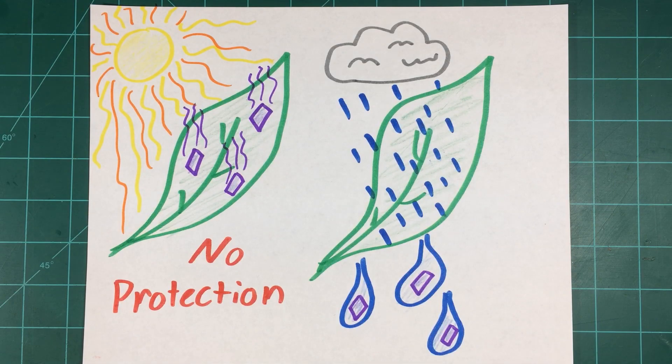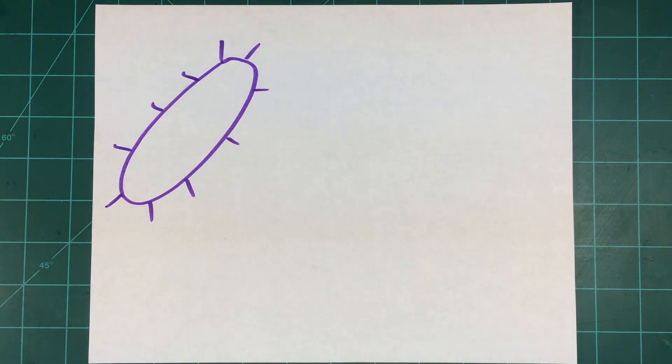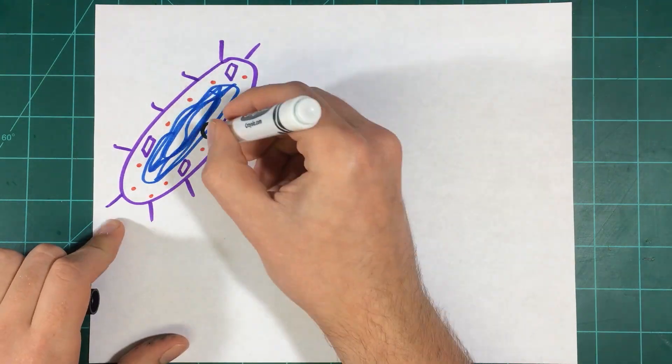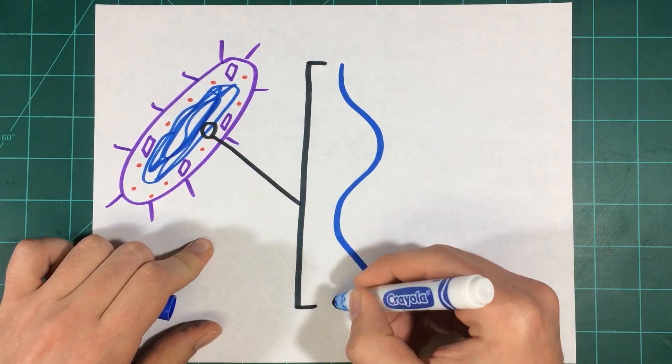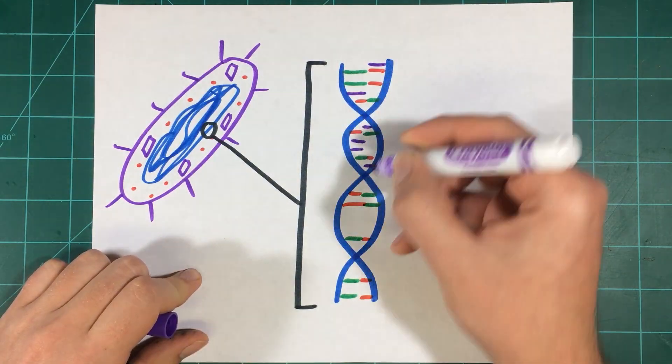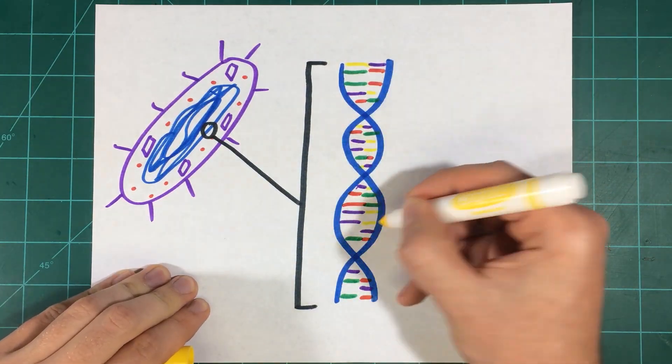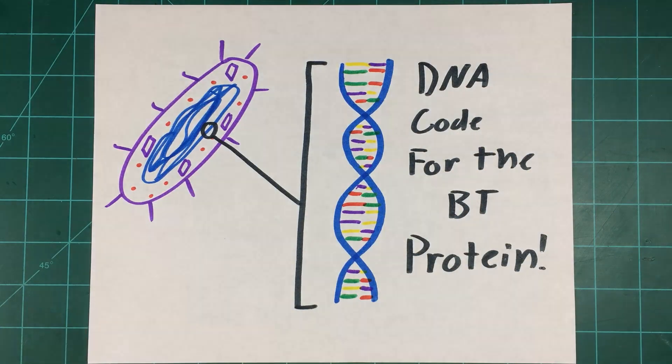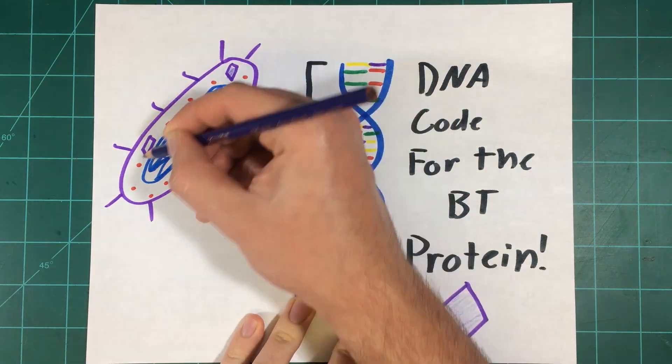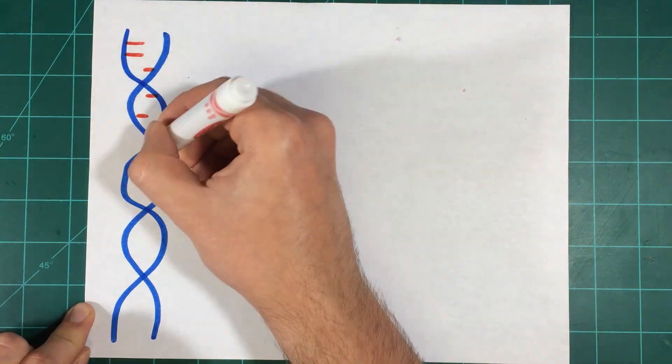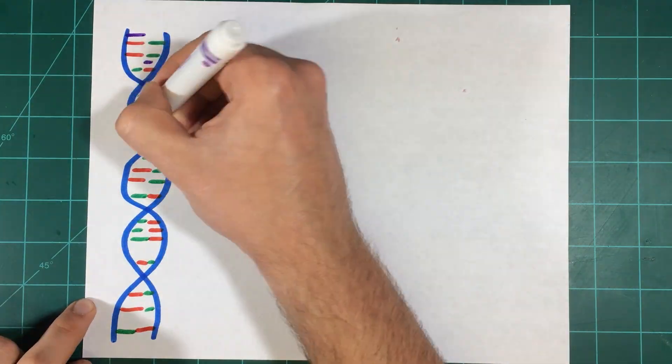The genome of BT was eventually sequenced, and scientists found a single gene that coded for the production of the protein that gave BT its insecticidal properties. Scientists hypothesized that if this gene could be spliced into a field crop like corn, they would see greater control of insect pests than any spray could ever hope to achieve. So scientists set out to insert the BT genes into the genome of corn.